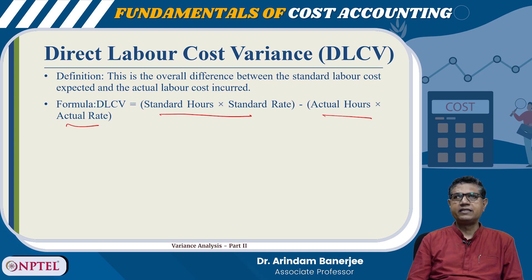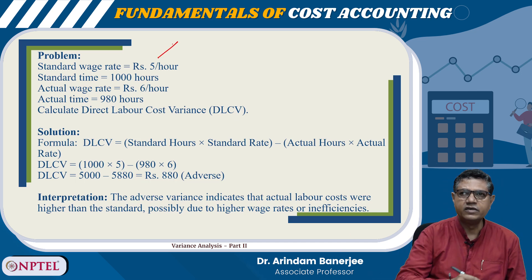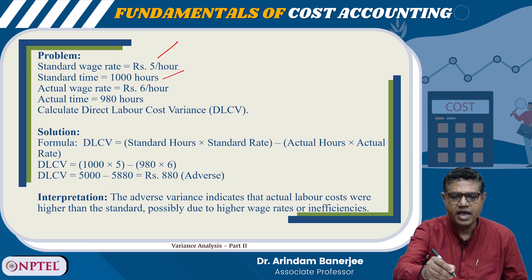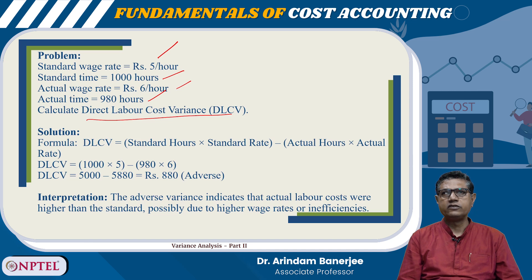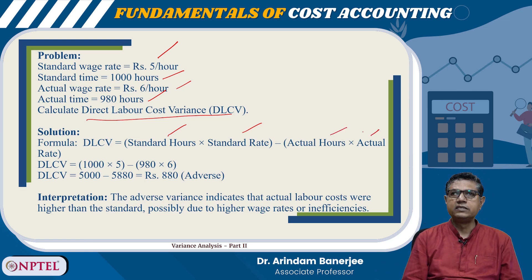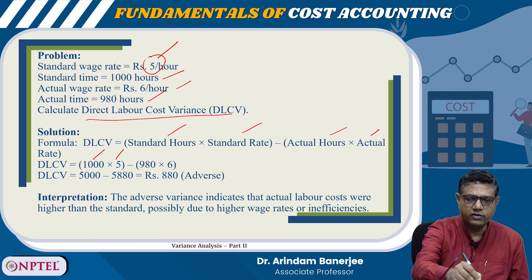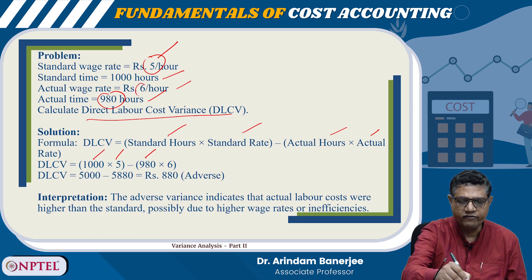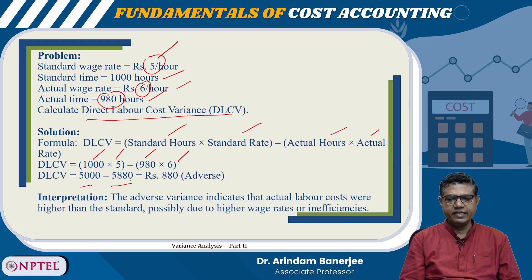If actual hours and actual rates are equal to standard hours and standard rates, the variance will be zero. Here is an example: standard wage rate is 5 per hour, standard time 1000 hours, actual wage rate 6 per hour, actual time 980 hours. Using the formula — 1000 × 5 = 5000, and 980 × 6 = 5880.